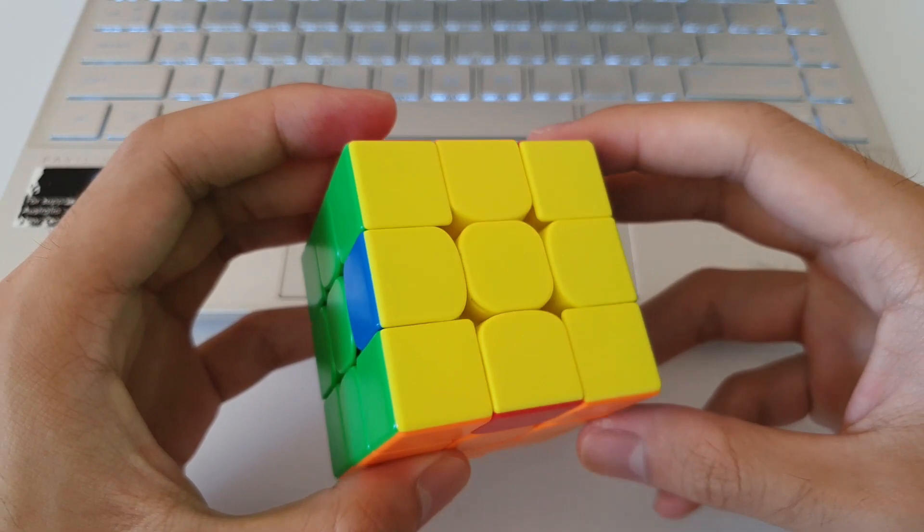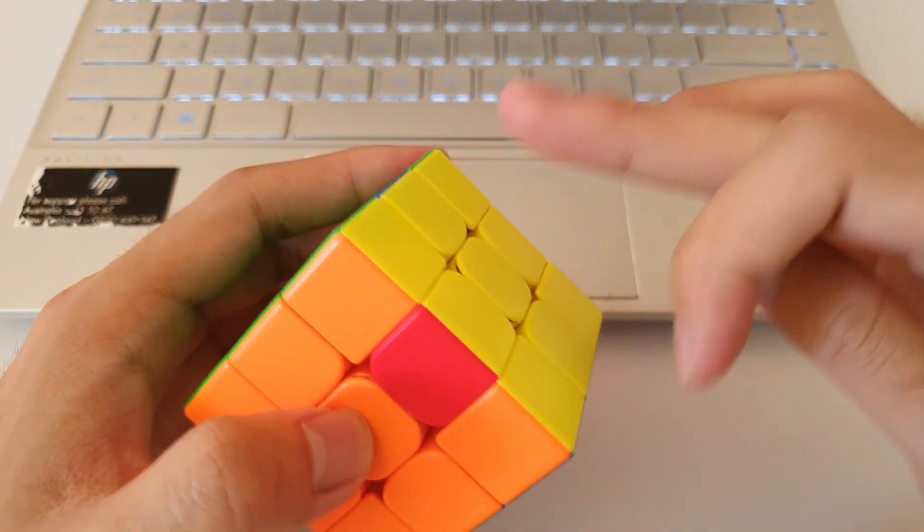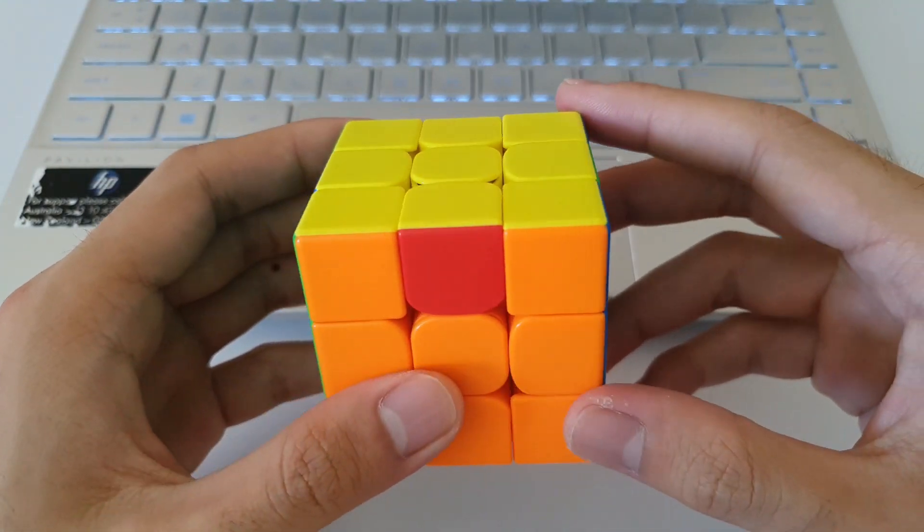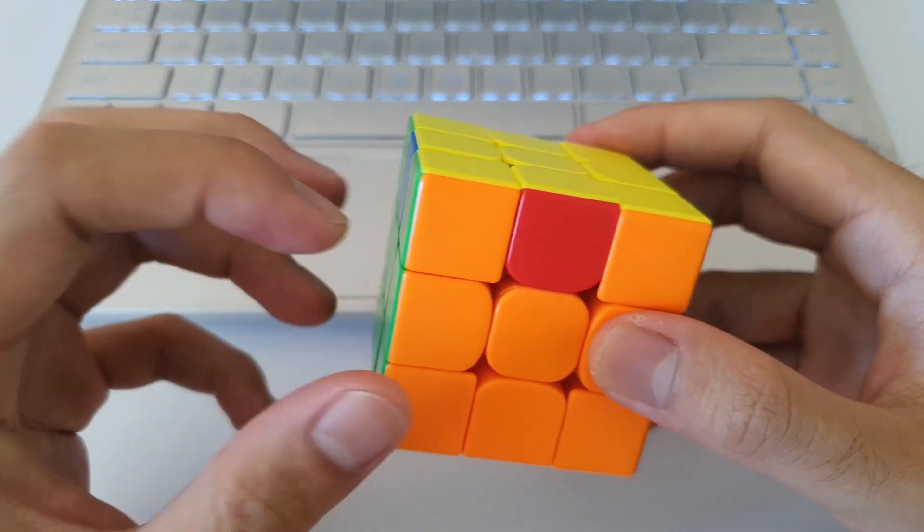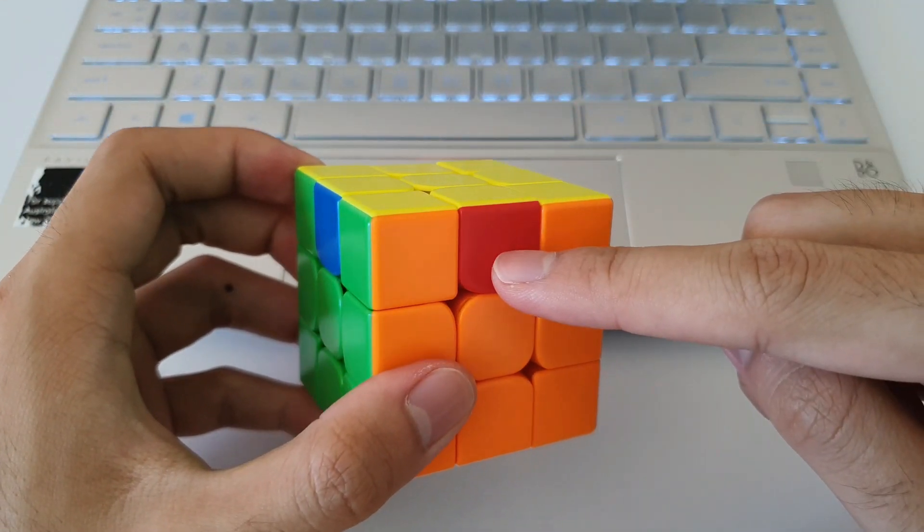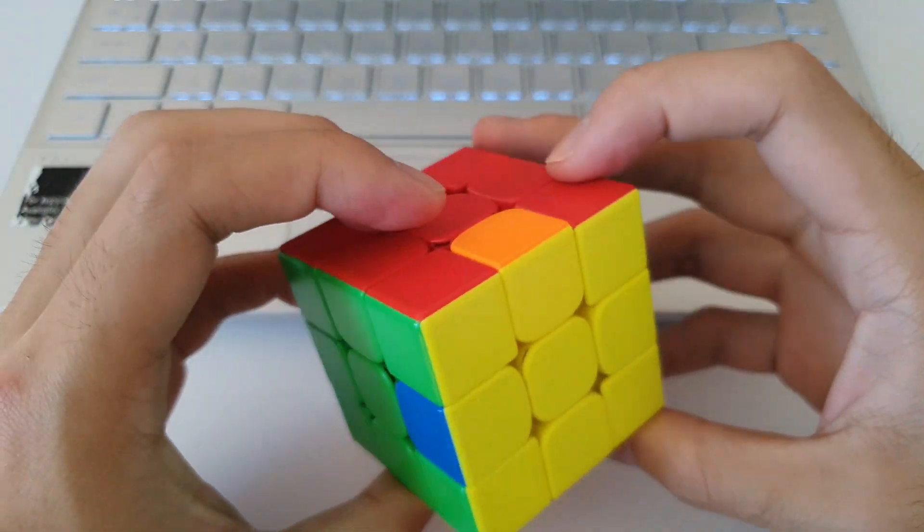Some facts about the H perm: it is an opposite edge swap, so the opposite edges are swapped. But instead of recognizing that, you can recognize it as headlights on all four sides, and the middle edge color is always going to be the opposite color to the headlights. And it's the same on all four sides.